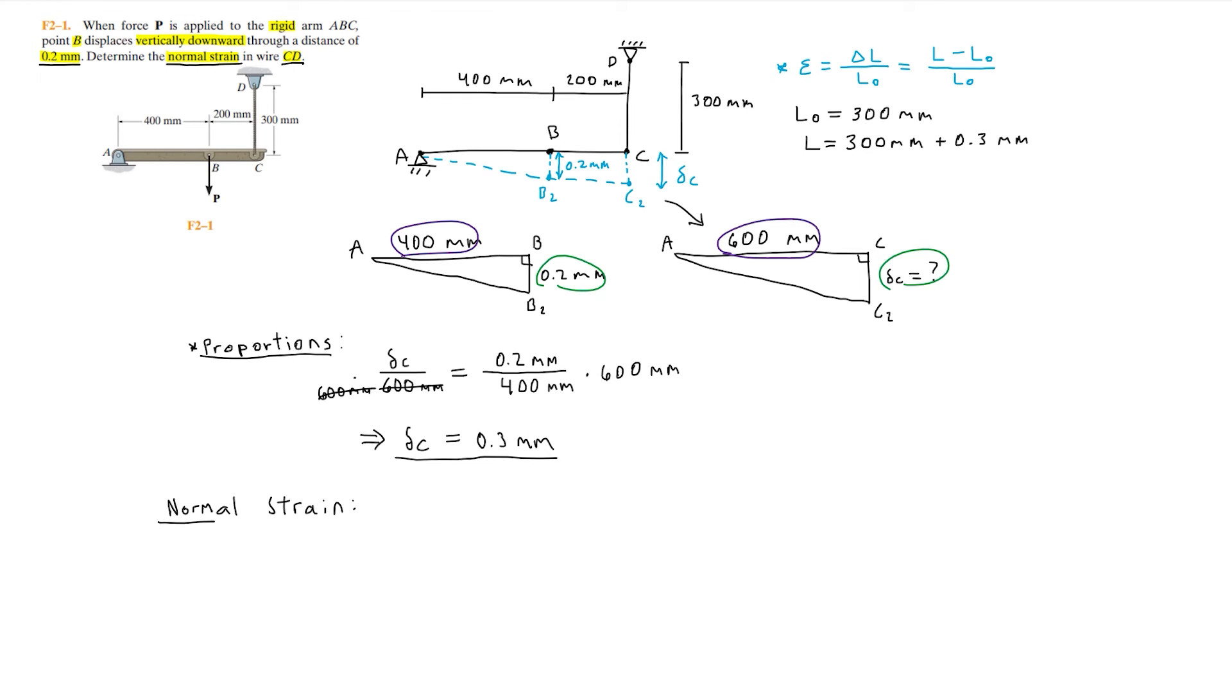Simply substituting in these values for the normal strain, we'll have epsilon CD is equal to the extended length 300.3 millimeters minus the original length 300 millimeters over the original length 300 millimeters, which is simply equal to 0.001 millimeters per millimeter, which is basically unitless.